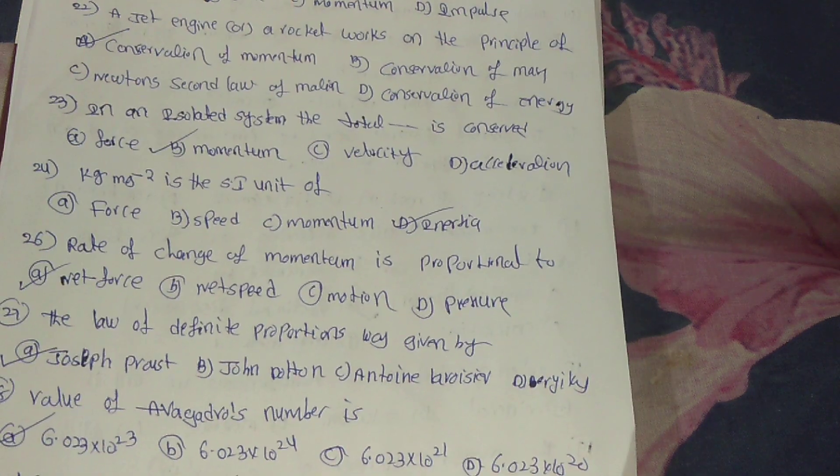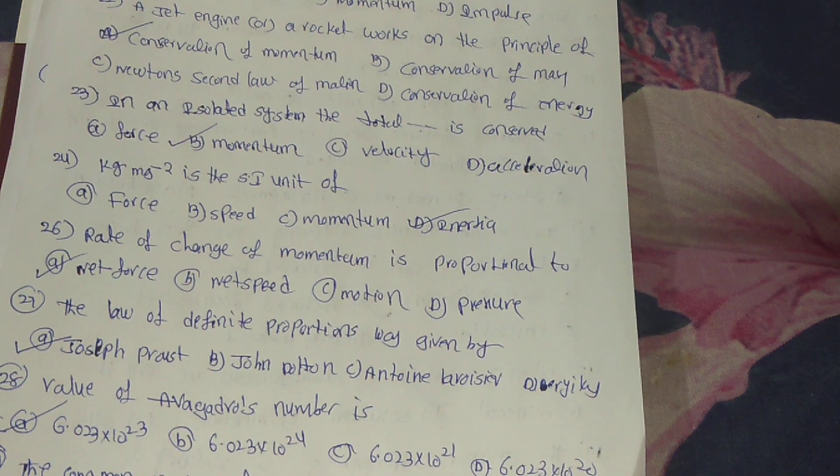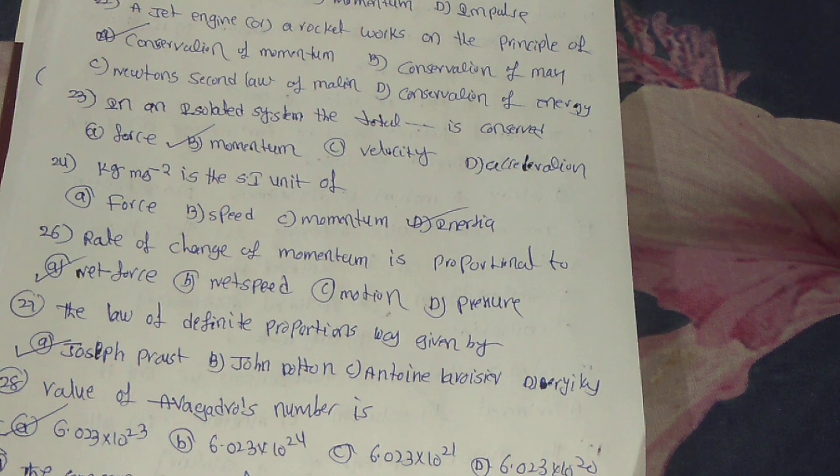27th: the law of definite proportions was given by Joseph Proust, option A.